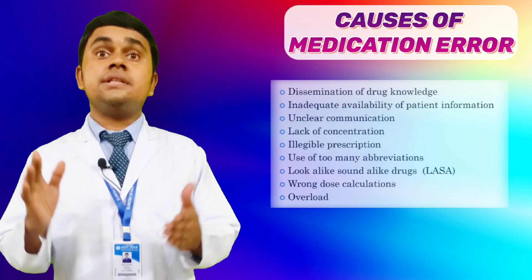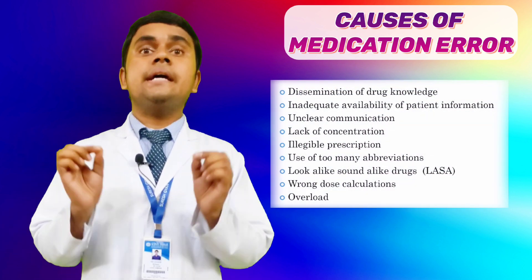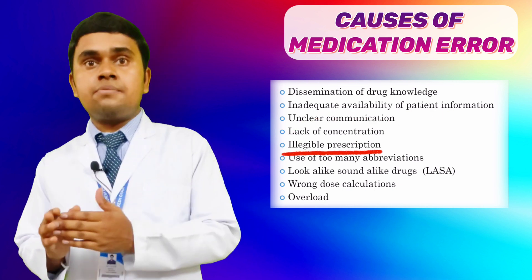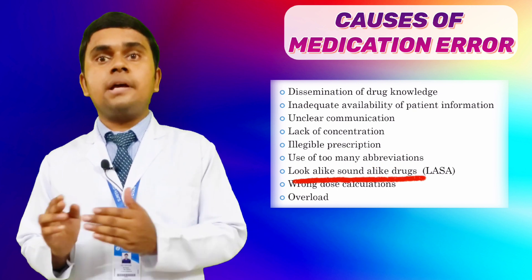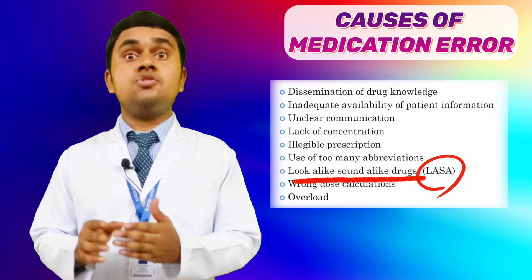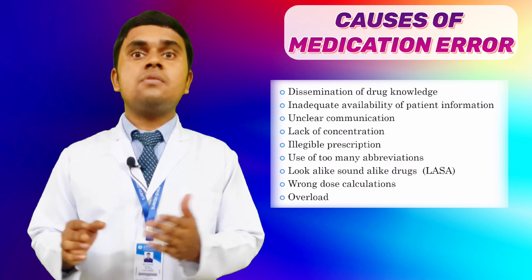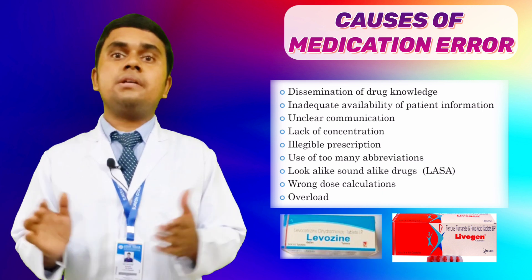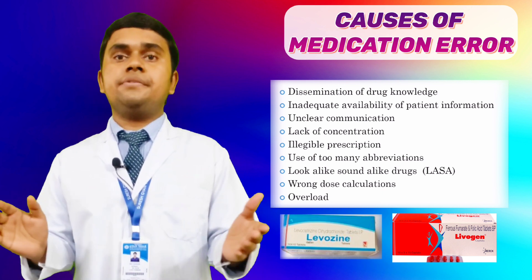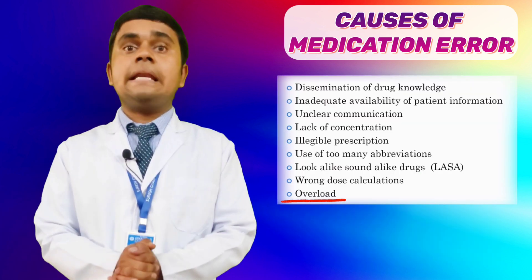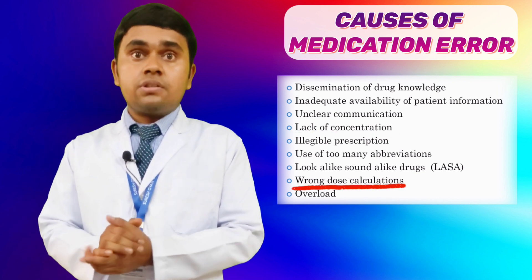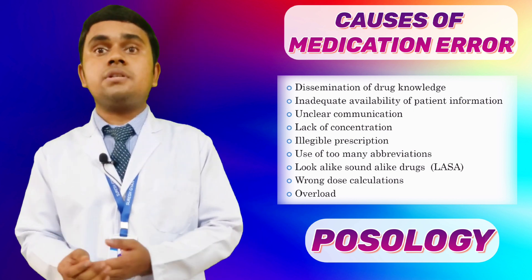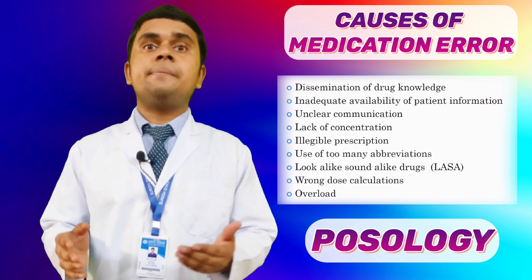General causes of medication error include inadequate availability of patient information, unclear communication, unclear prescription, use of too many abbreviations, and look-alike sound-alike (LASA) drugs — one of the most common causes. For example, levofloxacin and levogin look alike but have completely different compositions. Other causes include work overload, lack of concentration, and wrong dose calculations — errors in basic dosage formulas can ultimately lead to medication errors.